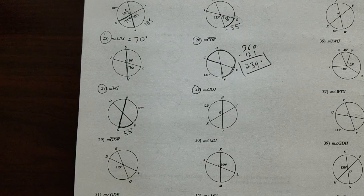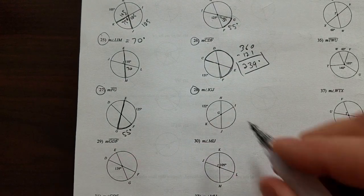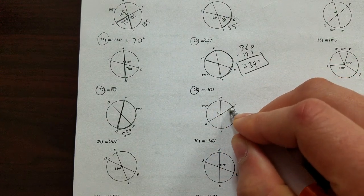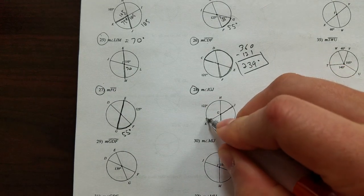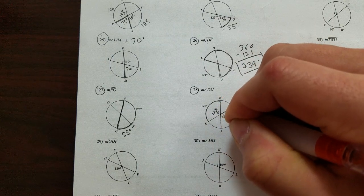Okay, let's see. 28. It says IGJ. IGJ is this one. Okay, this is one where we're going to use vertical angles because if this is 122, then this is 122, and so is this one.